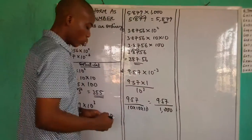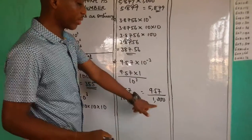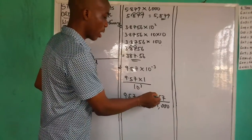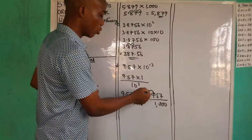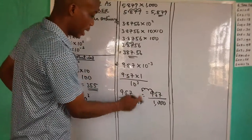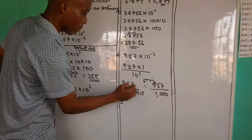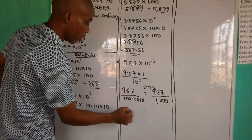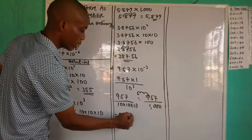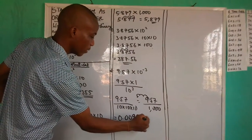So we are going to move to the left from the decimal point 3 times — 1, 2, 3. There is a decimal point here and there have to be zeros. So we write 0.00957 as the ordinary number.